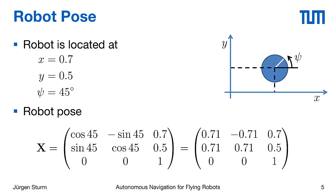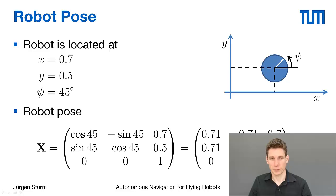To make it more concrete with some numbers, imagine the robot stands at x position 0.7, y position 0.5, and its heading is 45 degrees to the upper right. Then the robot pose could be described by the following matrix as shown here on the slide.